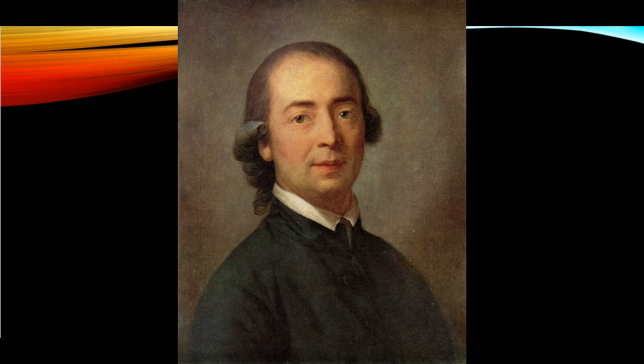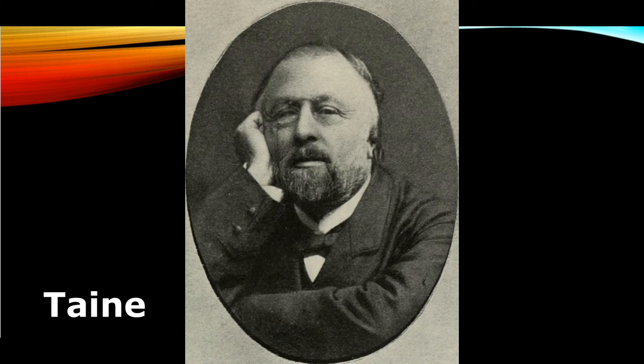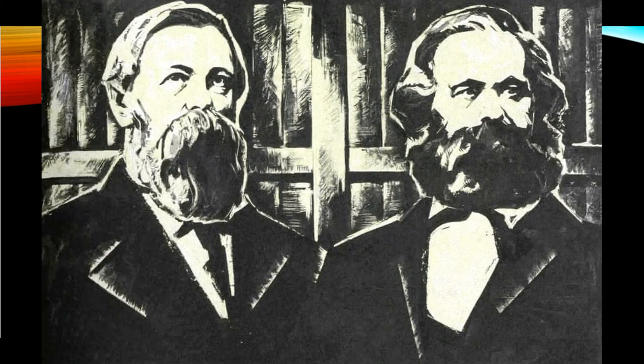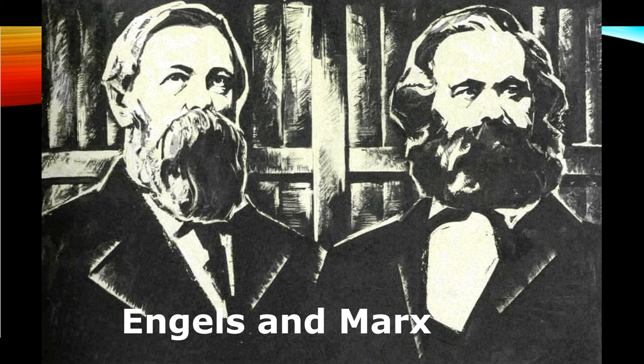Wilbur Scott also points out that the French critic and historian Hippolyte Taine believed that literature is the consequence of the moment, the race, and the milieu — milieu meaning social setting. Before the end of the 19th century, another aspect of sociological criticism came with the arrival of Marxism — Karl Marx and Engels's study of the methods of production and the ways human beings work together to survive and improve their social life — which led to the development of Marxist criticism in the 1930s, an important branch of sociological criticism.